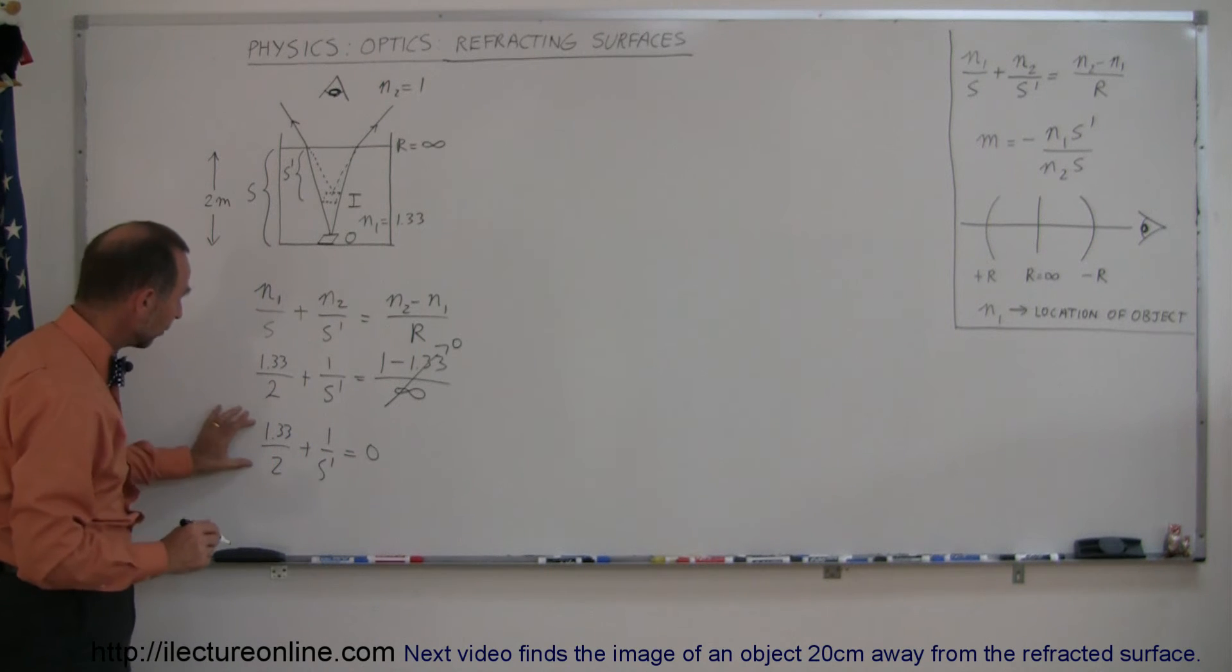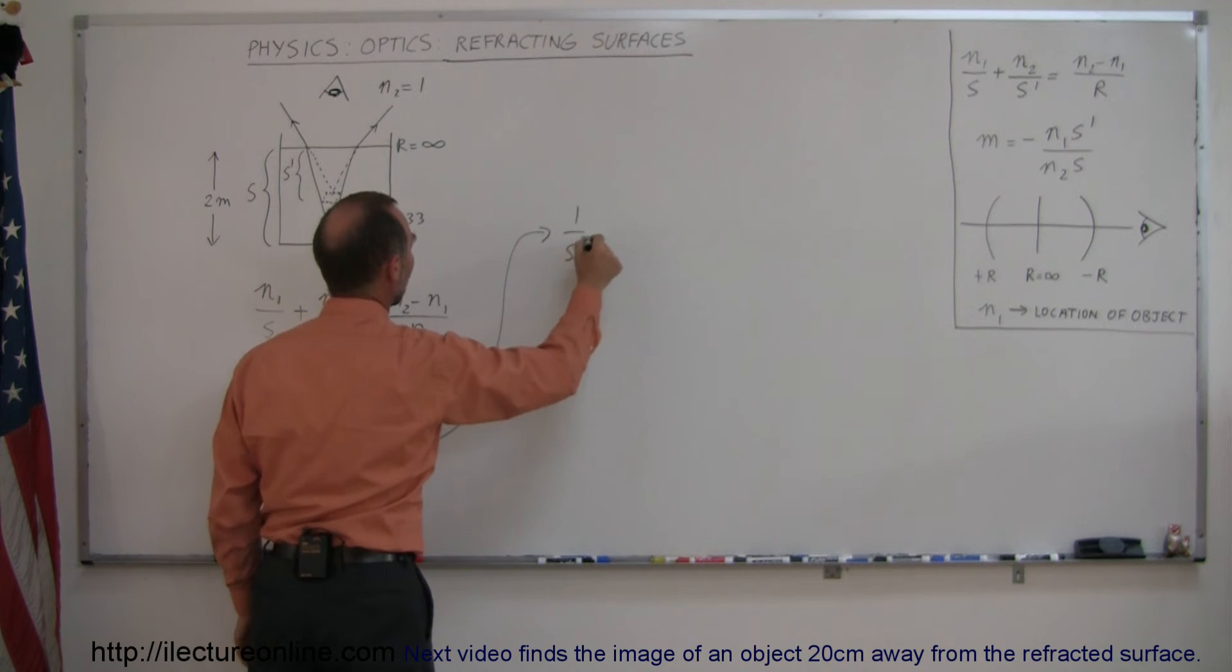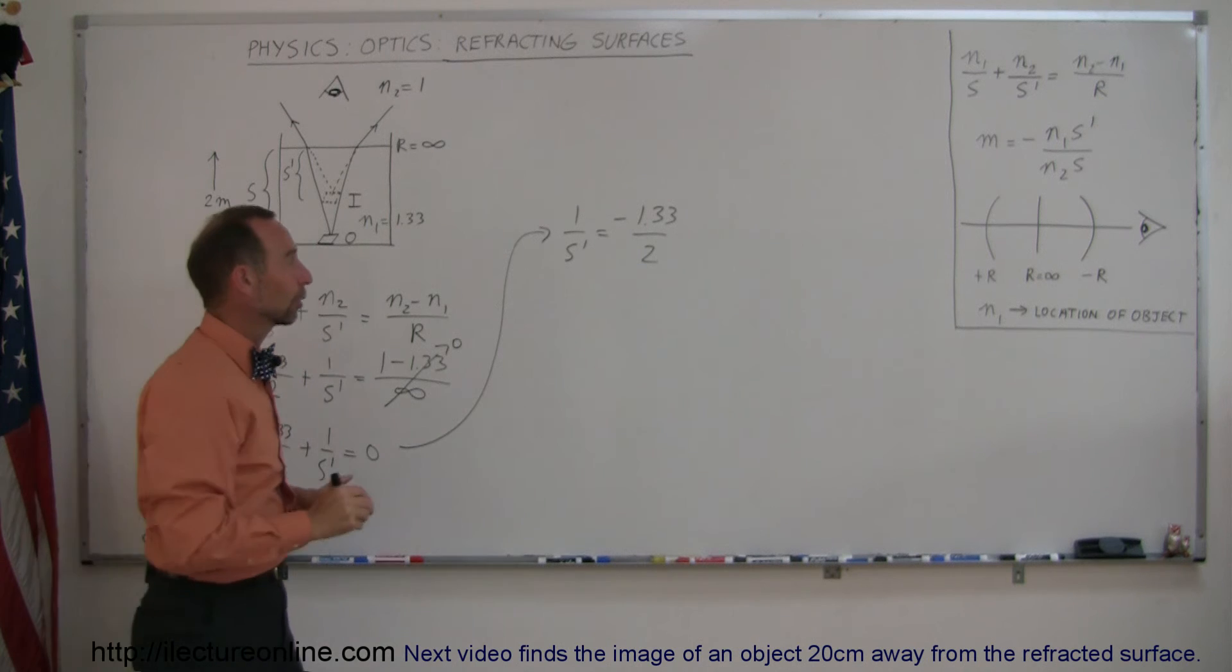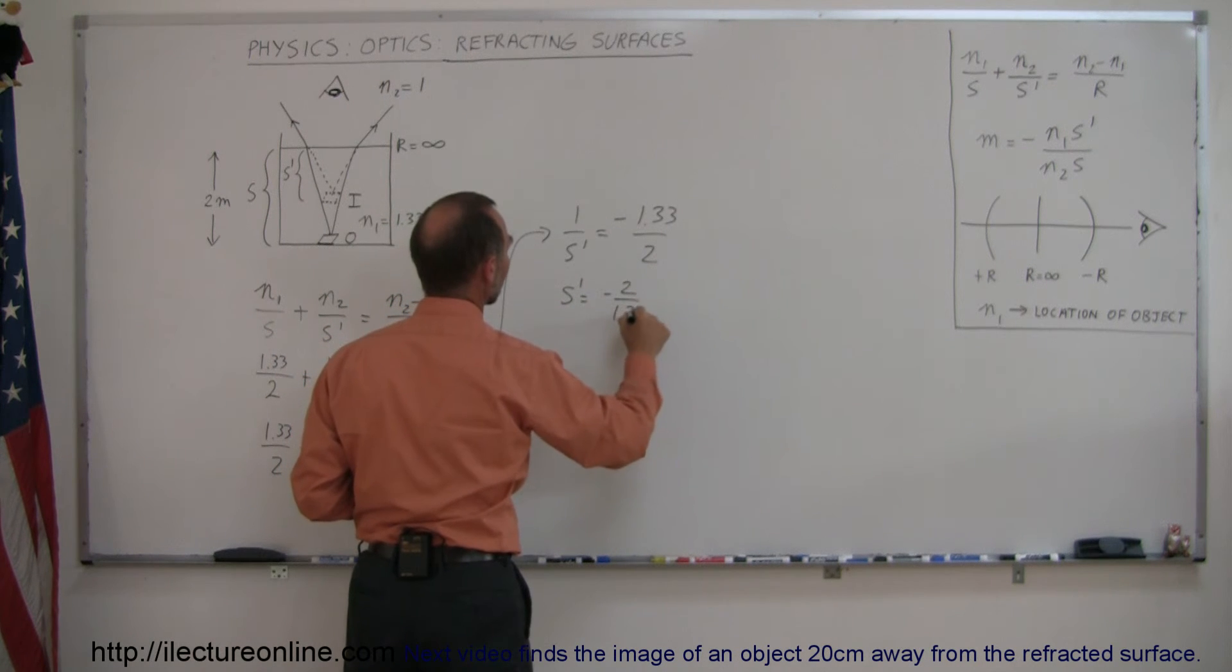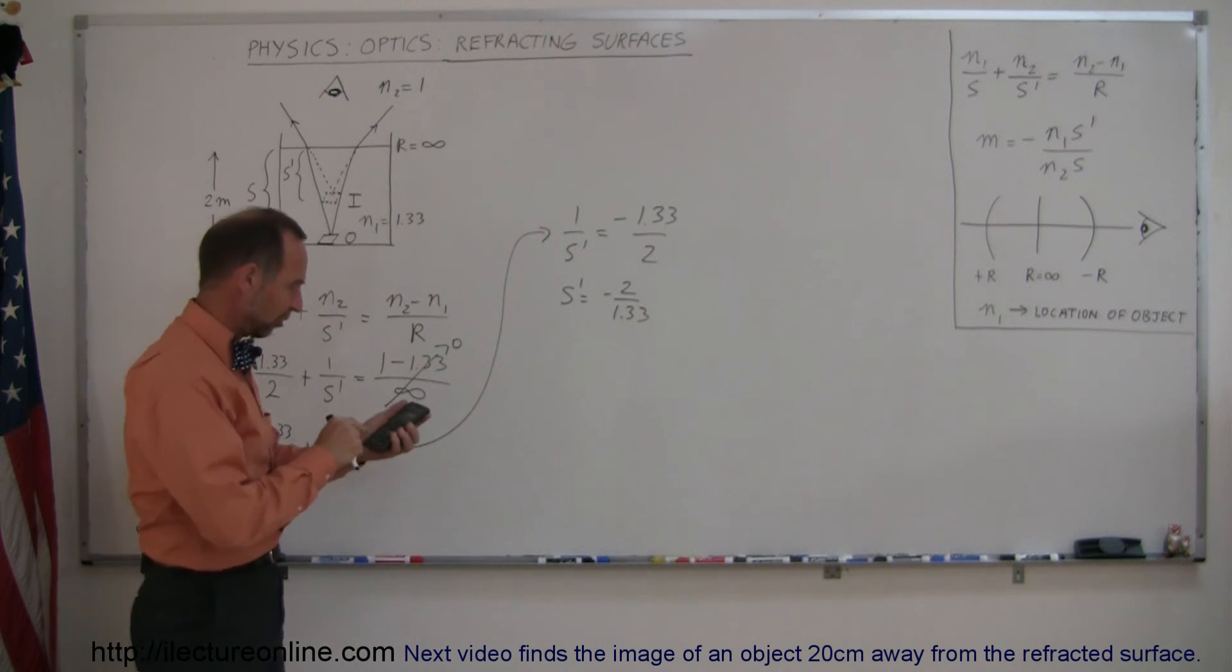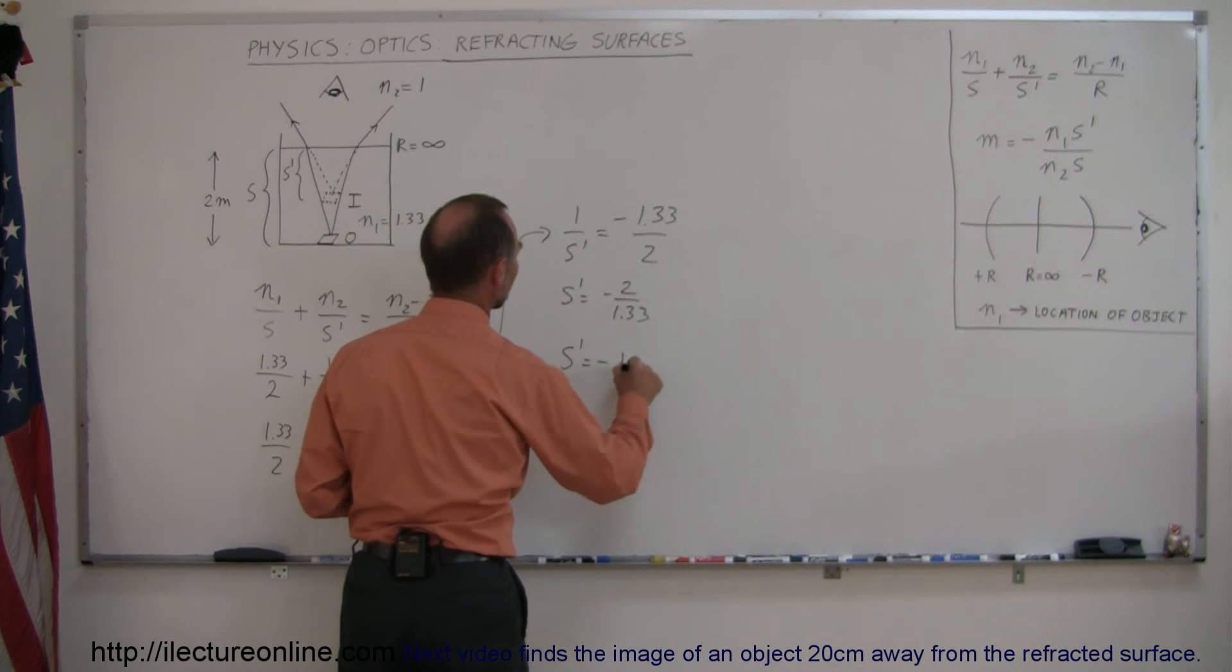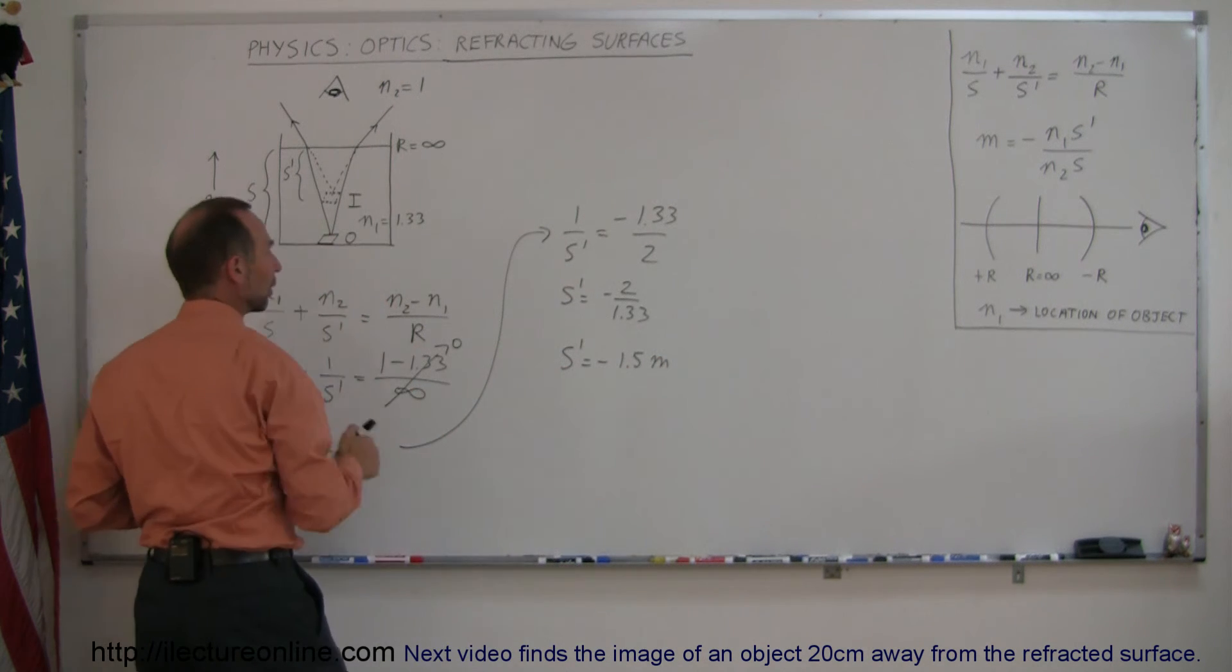Moving this part to the other side gives us 1 over S prime equals minus 1.33 divided by 2. Taking the inverse of that equation, S prime equals minus 2 over 1.33. With a calculator, that's 1.5. So S prime equals minus 1.5 meters, because we gave the depth of the pool in meters.